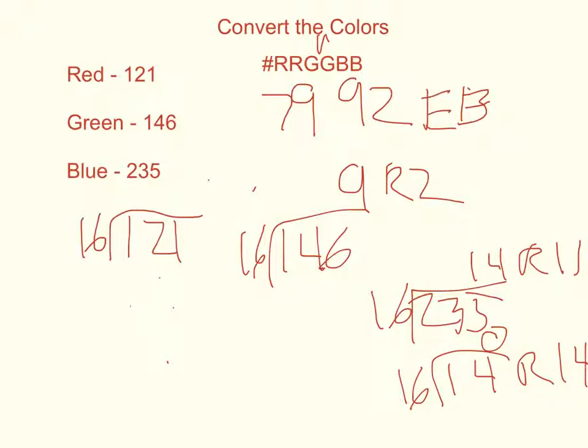So here we're going to have the letter E. Our number should be 7992EB to find the color that we want. I'm going to search Google real quick just to double-check our answer — let me make it a little bigger.